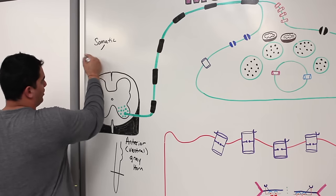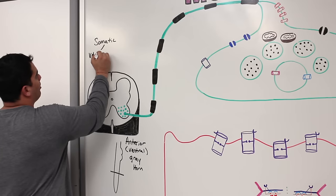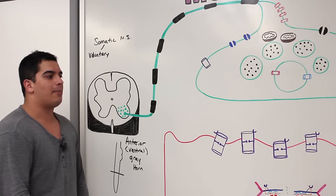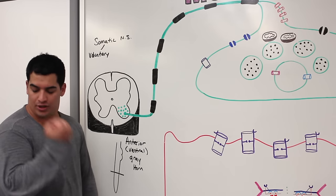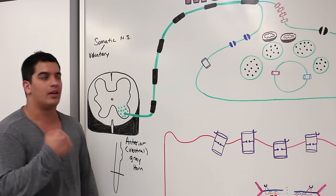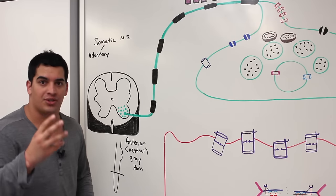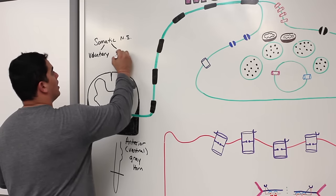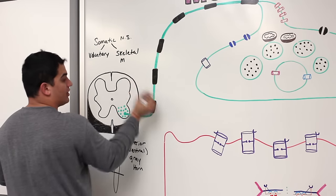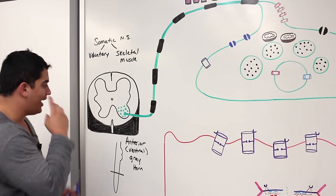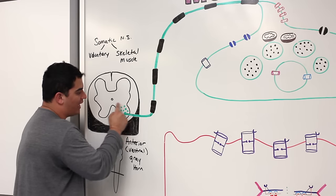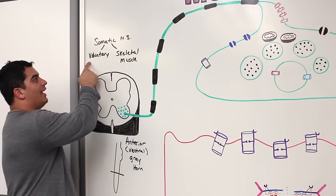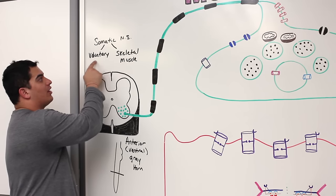The term 'somatic' has two key points. First, the somatic nervous system is voluntary — for example, deciding to flex your biceps is a voluntary, consciously controlled action. Second, the somatic nervous system mainly supplies the skeletal muscles. So the anterior or ventral gray horn contains the cell bodies of the somatic motor neurons, which control skeletal muscles under voluntary control.